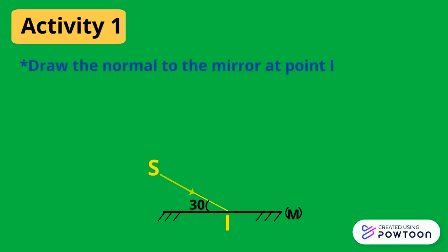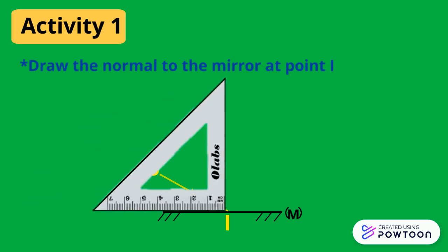Draw the normal to the mirror at point I. We place the set square with one of its sides on the surface of the mirror and the other side at point I. We can draw the normal IN.